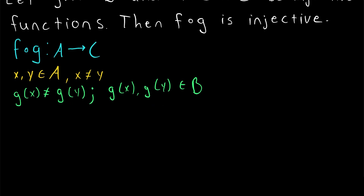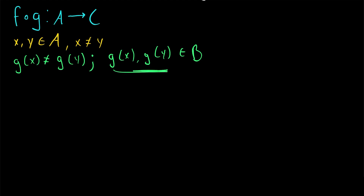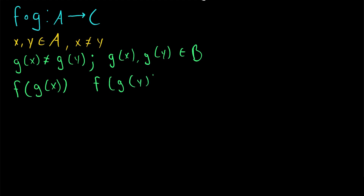Then we can consider what happens when we put these two elements into the function F. What do we know about F of G of X and how it relates to F of G of Y? Well, since F is also an injective function, we know that these two things must not be equal.